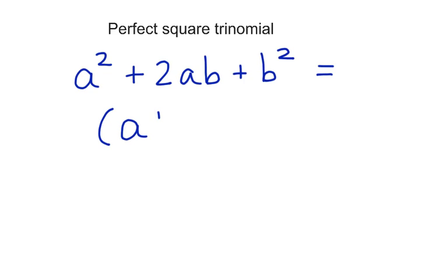First, you have to remember what a perfect square trinomial is. A perfect square trinomial takes the form a² + 2ab + b². And when it's factored, it factors into the form a + b, and that whole quantity is squared. You've seen perfect square trinomials and factored them in other concepts. But now we're going to use this information so that you can complete the square.